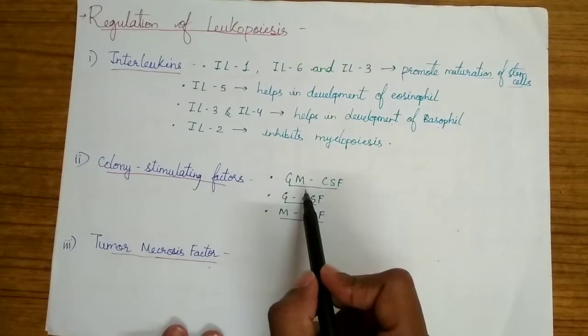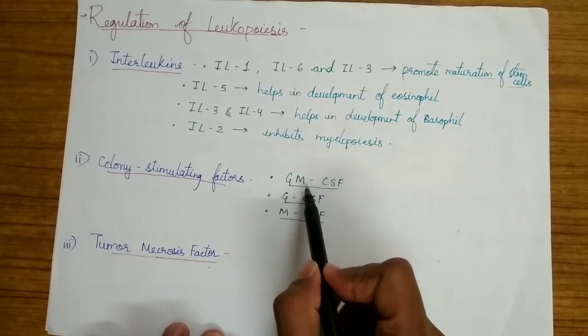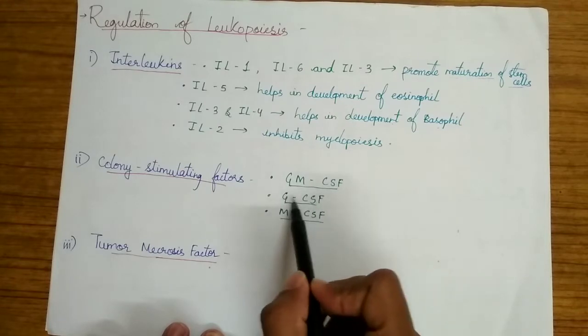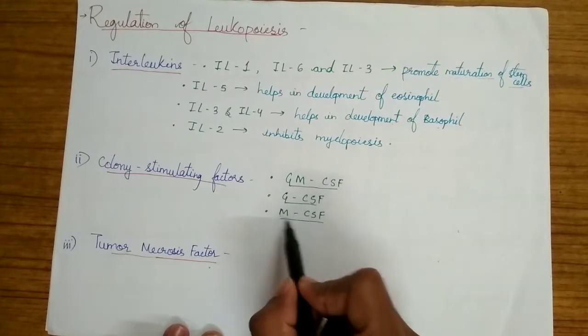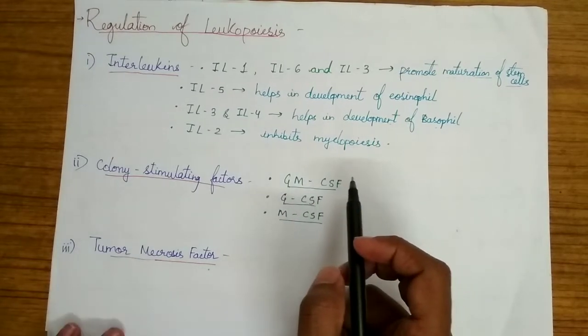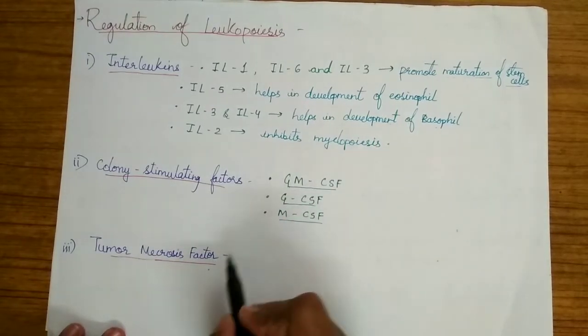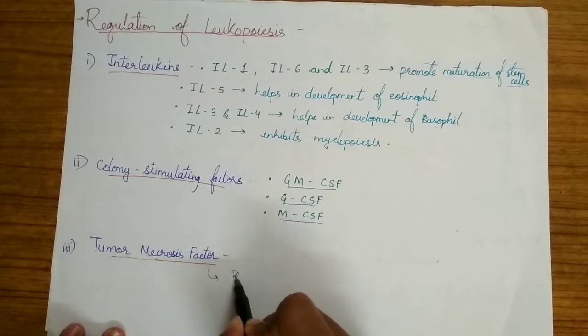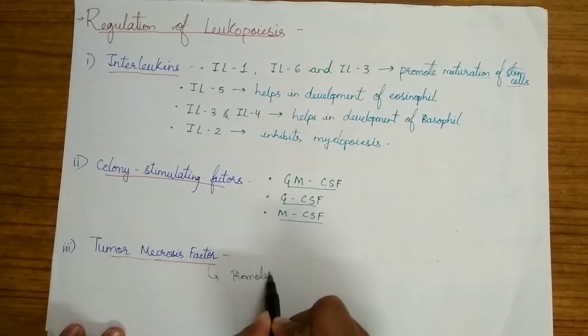The colony stimulating factors: granulocyte-monocyte-colony stimulating factors, granulocyte-colony stimulating factors and monocyte-colony stimulating factors. These are the factors which stimulate the process of leukopoiesis. Tumor necrosis factor even promotes the process of leukopoiesis.